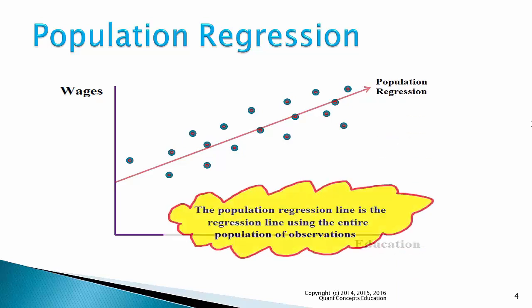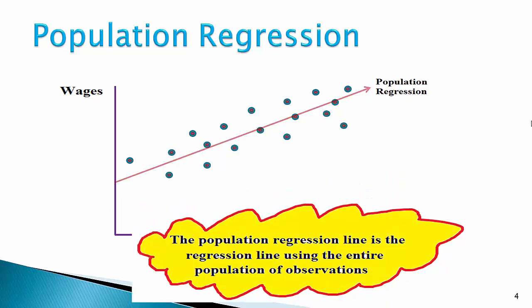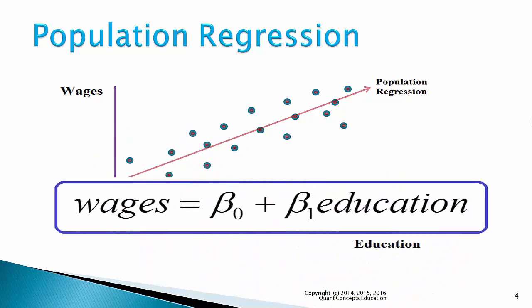The population regression line is a regression line using the entire population of observations. The regression line is denoted as follows: beta 0 is the intercept term and beta 1 is the slope coefficient.